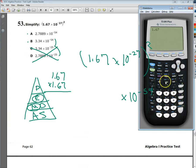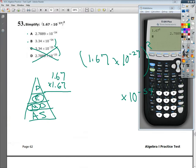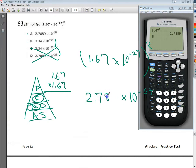So I'm going to raise this to the second power and I get 2.789, so that answer goes in front of my times 10 to the negative 54, so my answer to number 53 is A.